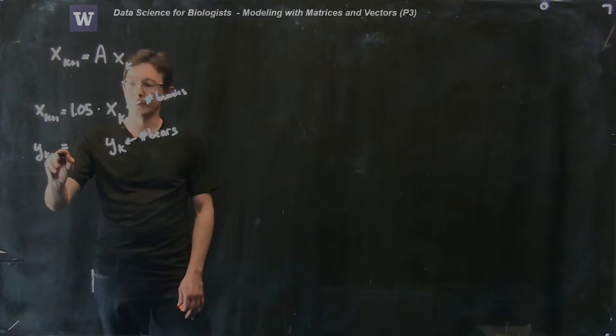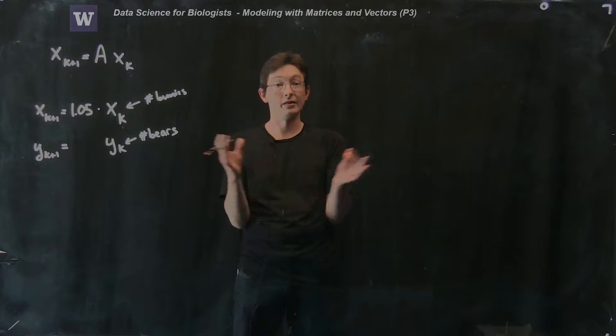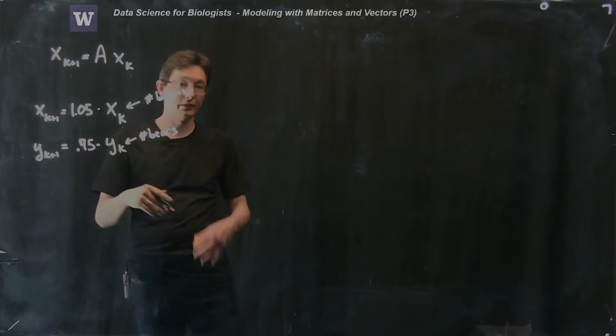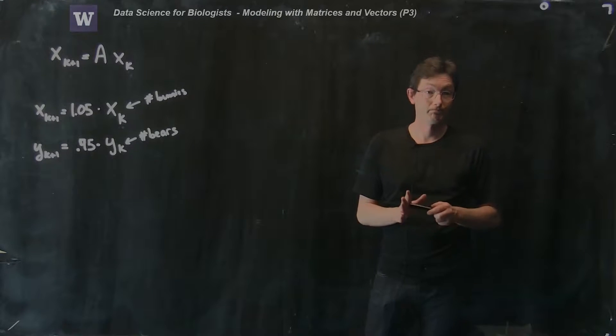So y_k+1, the number of bears next year, is less than the number of bears this year. Let's say that it's 95% next year of what it was this year. So every year I'm decreasing the number of bears by some amount. Make sense?